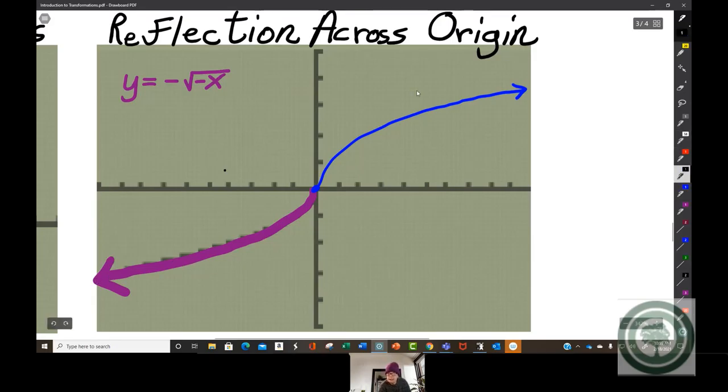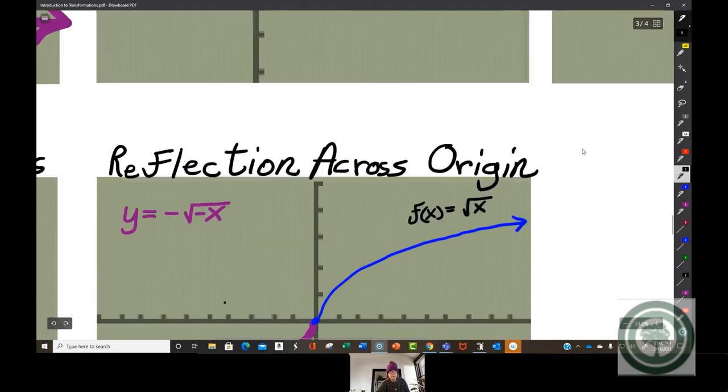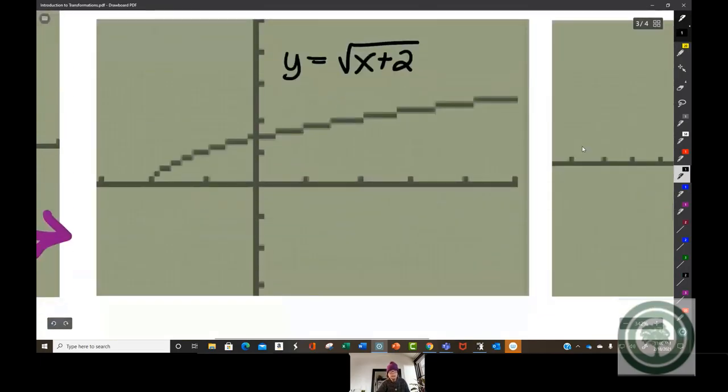So this is f of x, or y, equals the square root of x. This is, let's say, y equals negative the square root of negative x. It can be real fun to play with these on a graphing calculator. I'm sure you have better things to do, but it'd be fun, especially if you have kids, you can show them. That would get them all excited about math. Okay, but back to math...